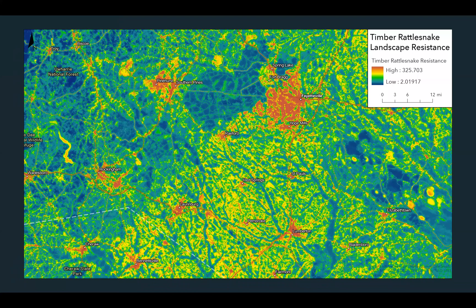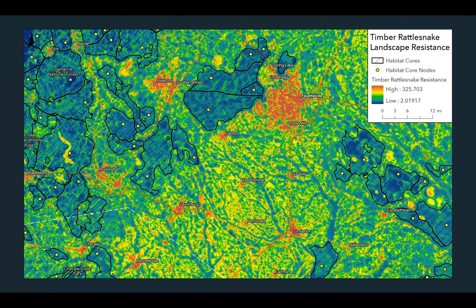Here's the landscape resistance model we created for timber rattlesnakes for our South Atlantic LCC study. Timber rattlesnakes are a great flagship species for connectivity just because they're so abysmally bad at crossing highways. And here's a set of polygon nodes or core areas we created for the rattlesnakes, which were then simplified to single node points — these yellow dots — to make the computations easier for a few of the different models.